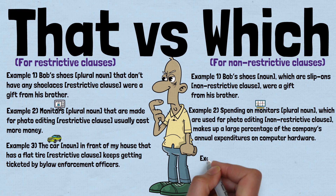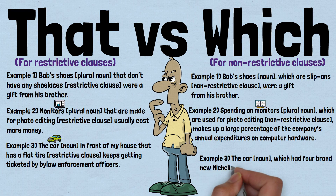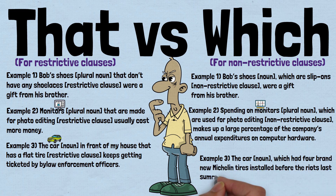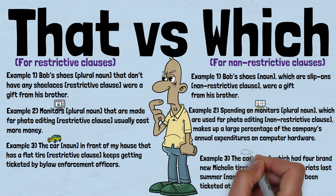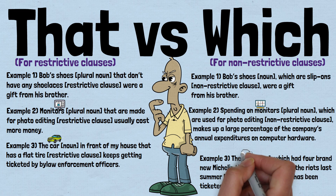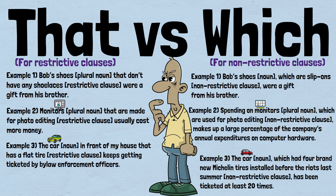Example 3: 'The car, which had four brand new Michelin tires installed before the riots last summer, has been ticketed at least 20 times.' In this example, the information about Michelin tires having been installed before the riots last summer does not provide any critical information about the car being ticketed. It is simply additional related information that could have been omitted. Either way, we would know that the car has been ticketed at least 20 times, and including or excluding the information about the tires and the riots does not change the meaning or context of the information regarding the car being ticketed. Therefore, we use the word 'which'.